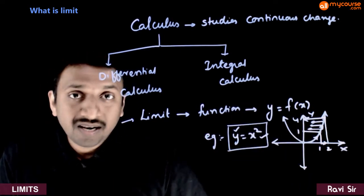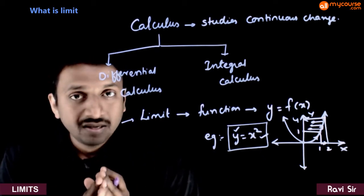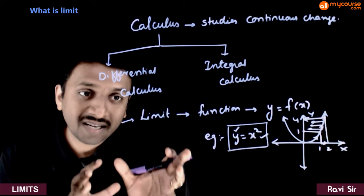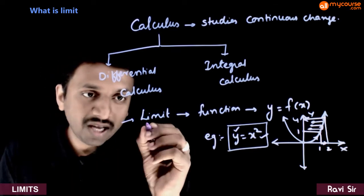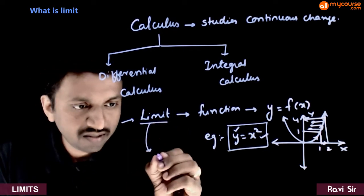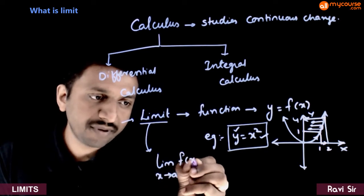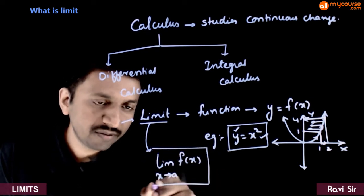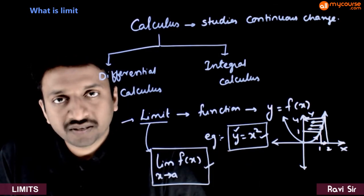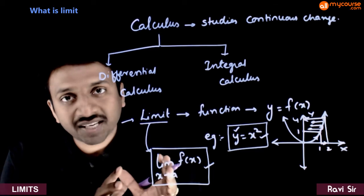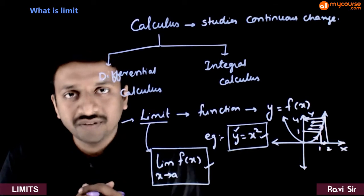Now let us try to understand the concept of limit. You need to understand some standard notation. In terms of limit, we write an expression like this: limit x tends to a, f of x. Once you understand the meaning of this expression, you will understand how to find the value of this limit.